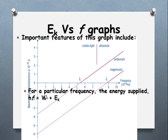Finally, for any particular frequency, the energy supplied, HF, will equal the work function plus the kinetic energy. So you've got work function is from there up, and then the kinetic energy is from the x-axis, or the frequency axis, up to where it meets the line.